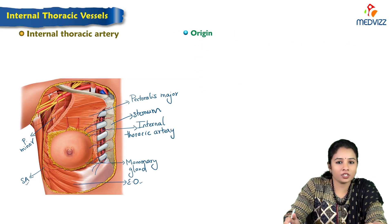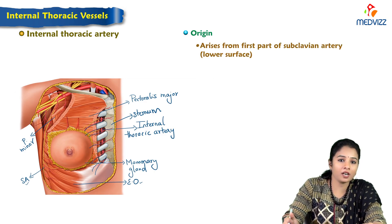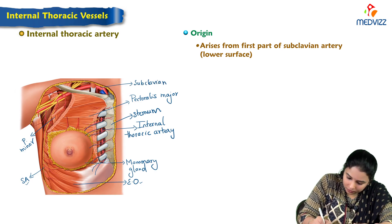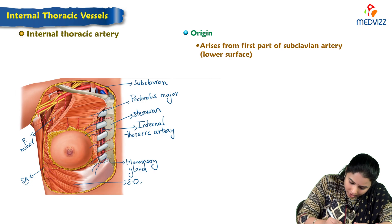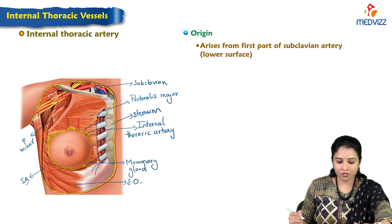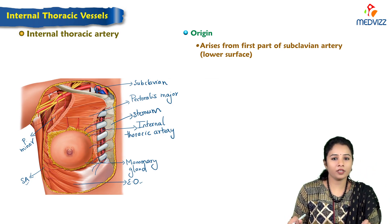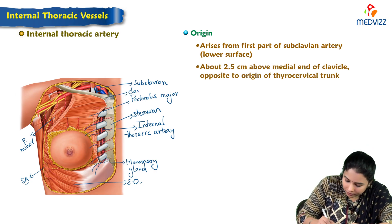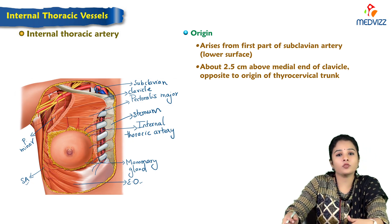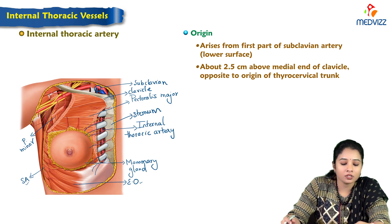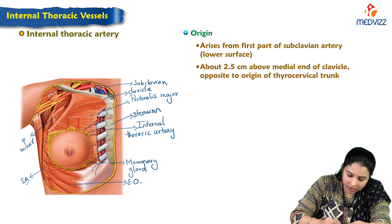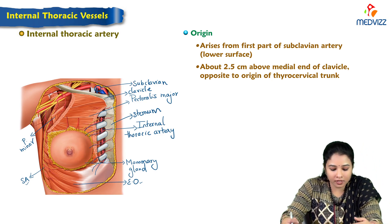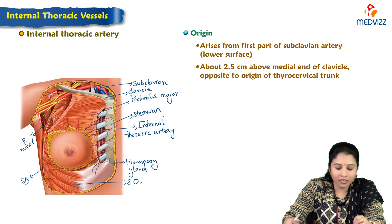Let's see the origin of the internal thoracic artery. It gets its origin from the first part of the subclavian artery, about 2.5 centimeters above the medial end of the clavicle, opposite to the origin of the thyrocervical trunk — that is, exactly at the level of the origin of the thyrocervical trunk.